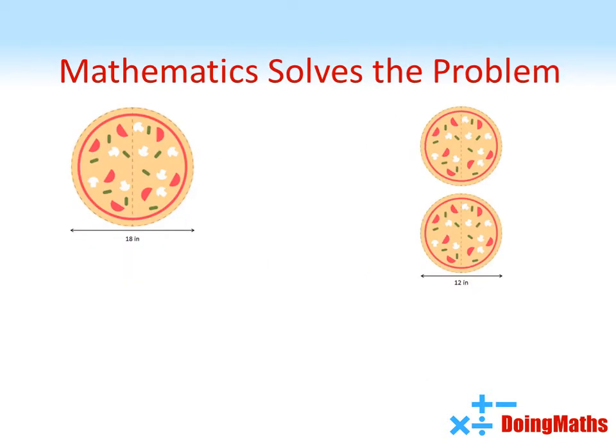Fortunately the maths is fairly simple. To find the area of a circle we square the radius and multiply this by pi. For the large pizza the radius is 9 inches so squaring this and multiplying by pi gives an area of 254.5 square inches.